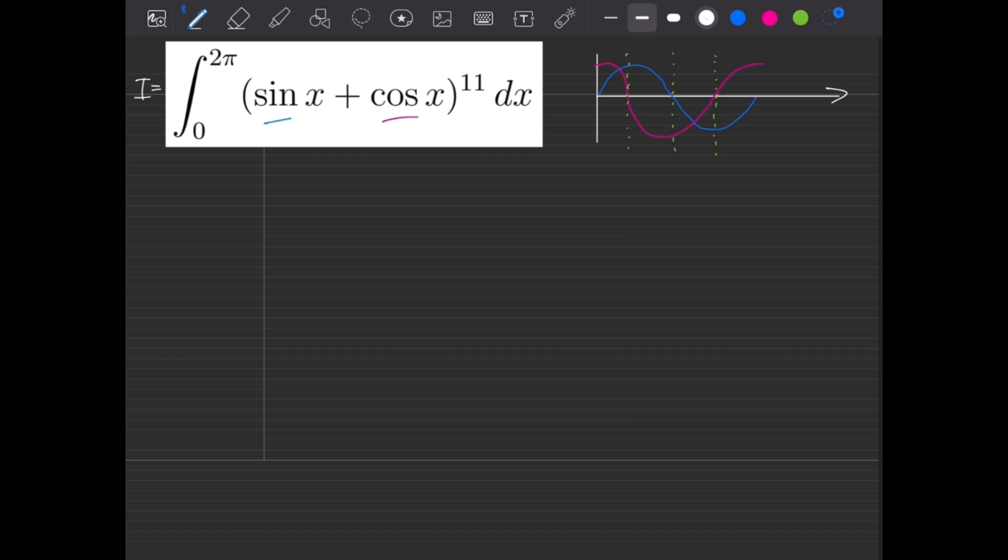So if we call f of x the thing inside the bracket, i.e. sine of x plus cos of x, what we can say is that f of x minus pi, so moving the graph to the right by pi radians, so section 1 is now on top of section 3, is equal to the negative of the function. Spot on.